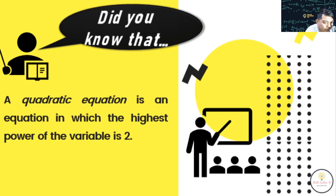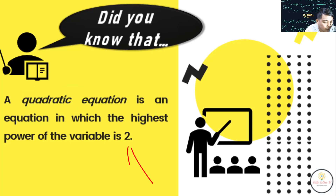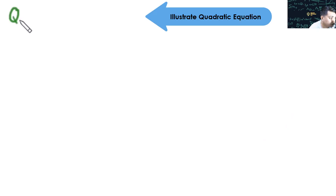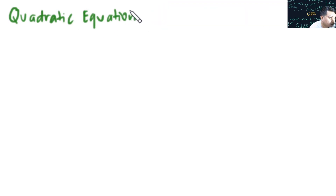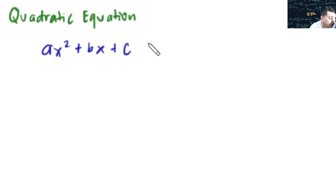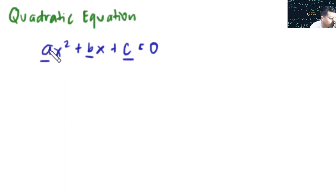A quadratic equation is an equation in which the highest power of the variable is 2. The standard form is ax² + bx + c = 0, where a, b, and c are real numbers and a must not be equal to 0.